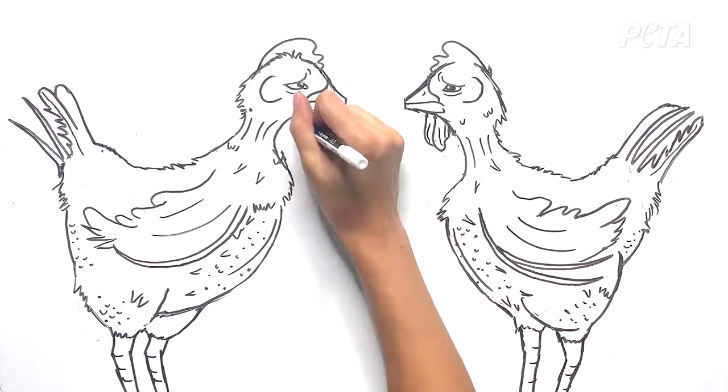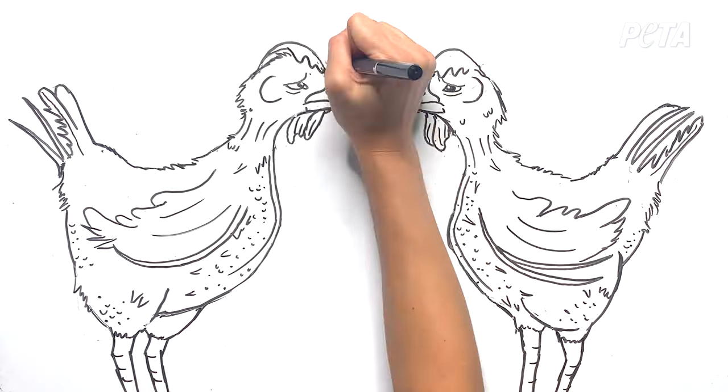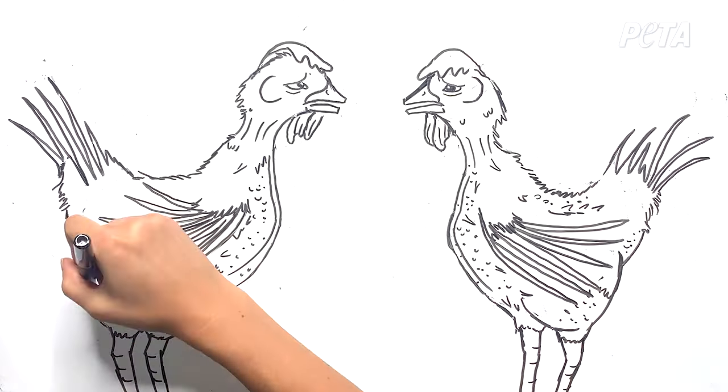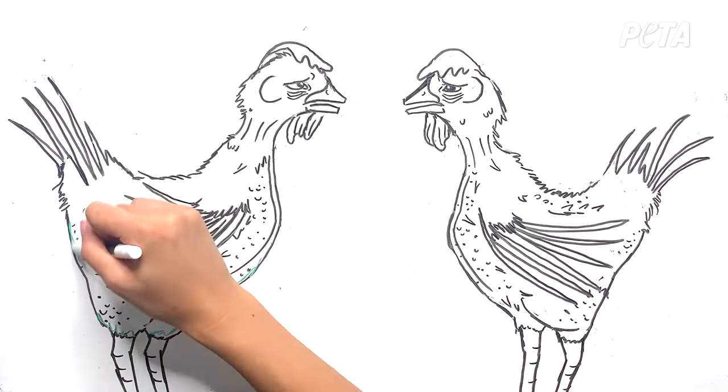But our environment was making us grow weaker and weaker. It became harder to lay eggs. But we kept trying, because we were afraid what they would do to us if we stopped.